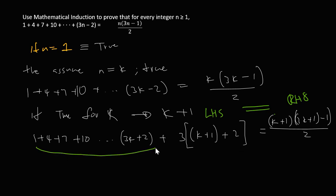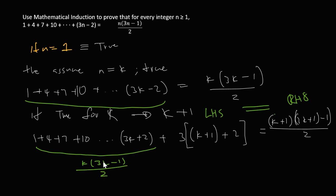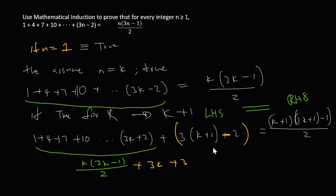We have parts of the sequence we can substitute using our inductive hypothesis. We said those terms equal k times three k minus one over two. So instead of writing out the whole sequence, we replace it with k times three k minus one over two. Then we distribute three, giving us three k squared plus three k, and correcting a sign error: it becomes minus two.